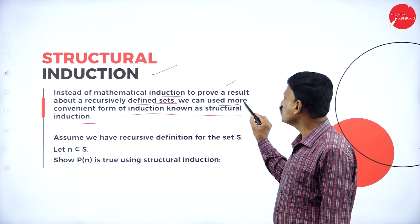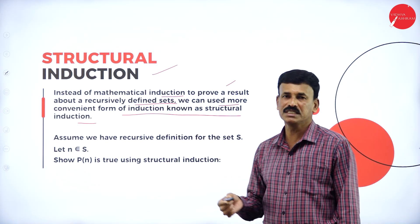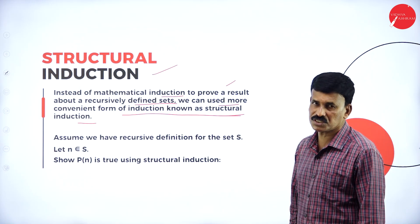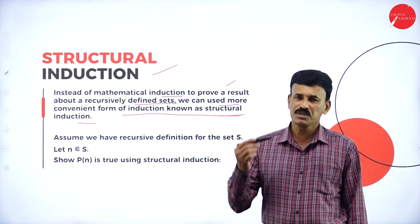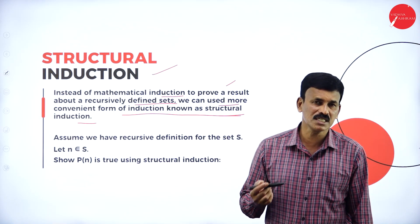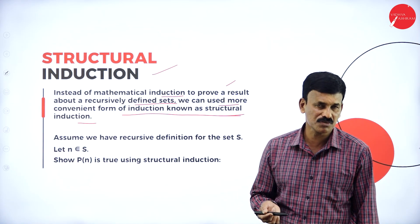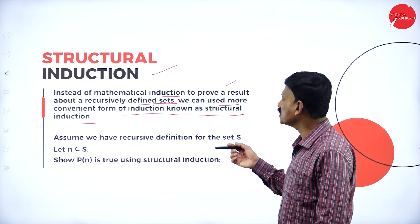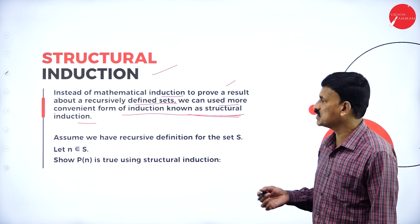The more convenient form of induction process is structural induction. In mathematical induction we use P(N) and establish validity by taking N equal to 1, and by assuming P(K) is true implies P(K+1) is also true. The more convenient form is structural induction.